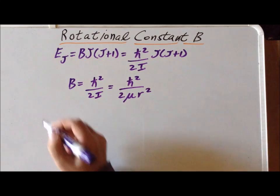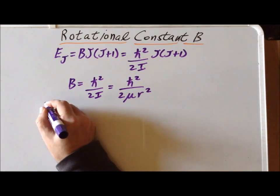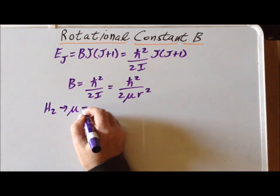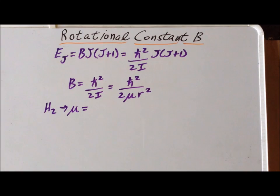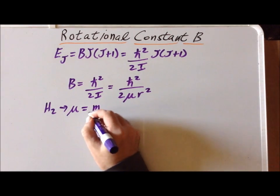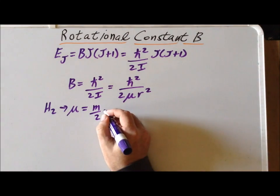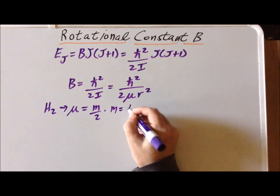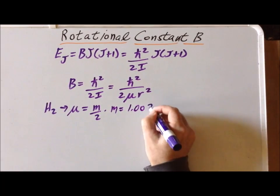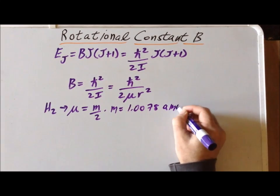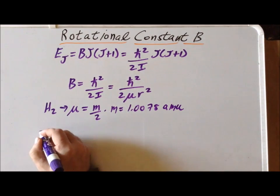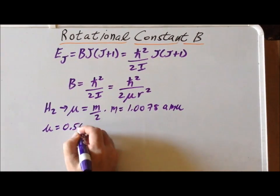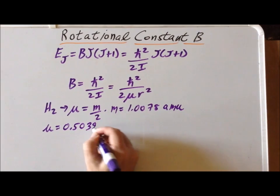So the first thing we need to determine for our molecule, which is going to be H₂, is to find the reduced mass. In the case of a homonuclear diatomic, the reduced mass is simply equal to the mass of one of the atoms divided by 2. The mass of hydrogen is equal to 1.0078 atomic mass units. Therefore, the reduced mass is one half of this, which is equal to 0.5039 atomic mass units.